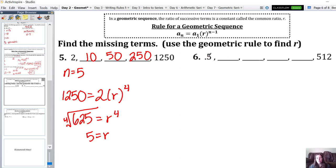Number 6, we're starting with 0.5, ending with 512. Here we have 1, 2, 3, 4, 5, 6 numbers. We have 6 different terms. So n is 6.